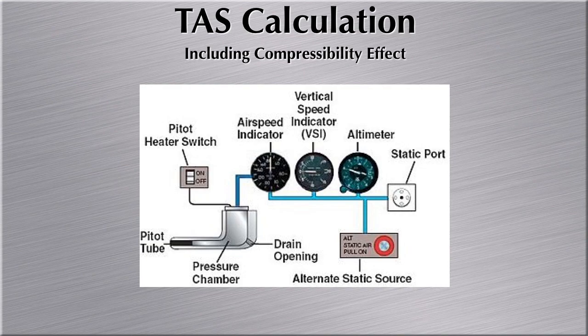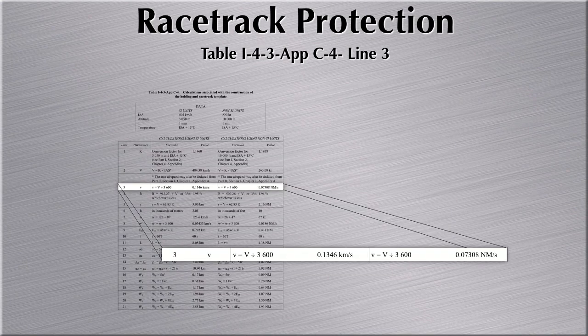Only at high altitudes is there a bit of a difference. If you don't account for the compressibility effect, you will be more conservative because you will calculate a faster airspeed. However, you can always program that into a spreadsheet and see what the effect on true airspeed actually is. Let's continue with line 3, where we calculate the speed per second by taking the true airspeed and dividing it by 3600.